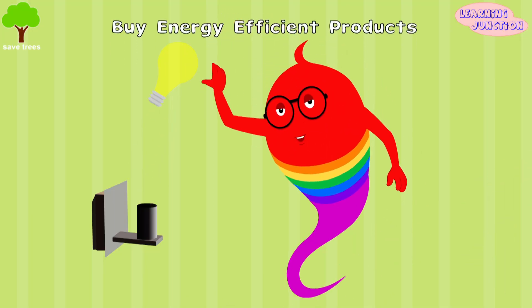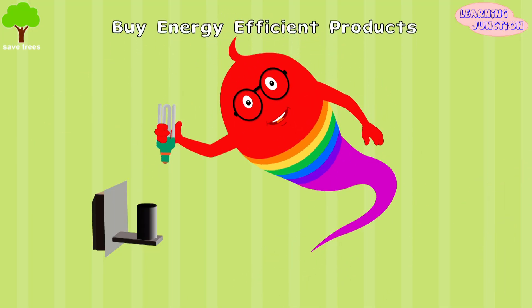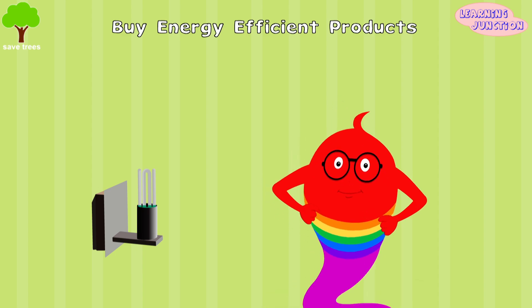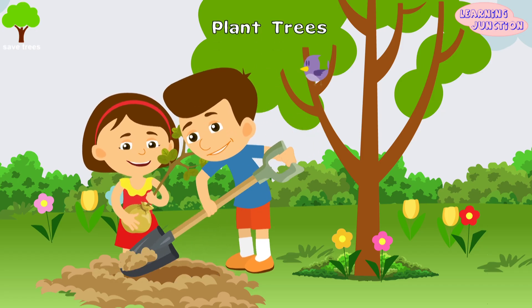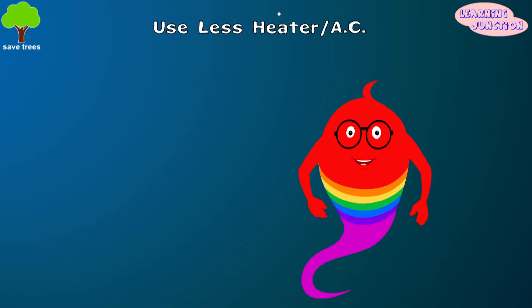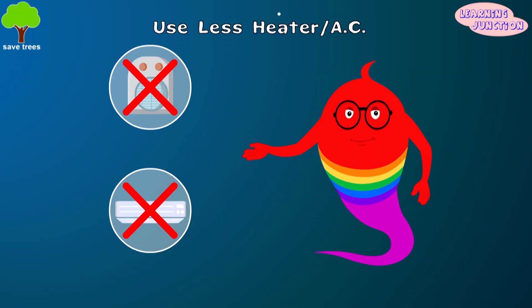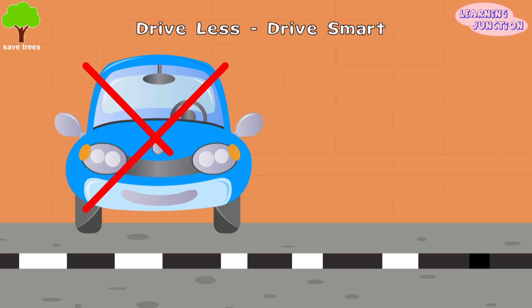We should buy energy efficient products that use far less energy than standard products. Plant a tree because they absorb carbon dioxide and give off oxygen. We should use less heat and air conditioning. Always drive less and drive smart to avoid pollution.